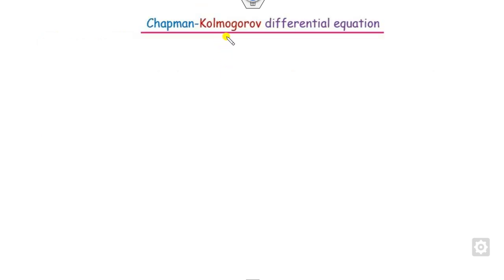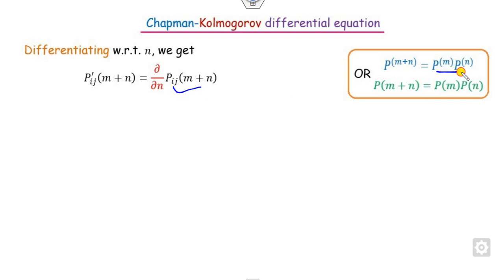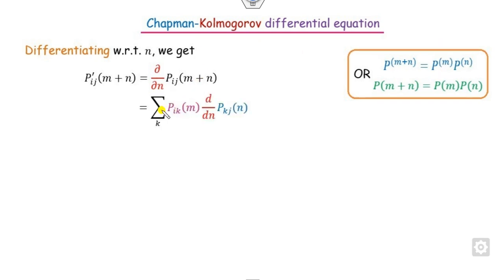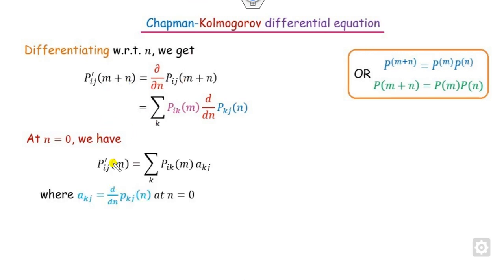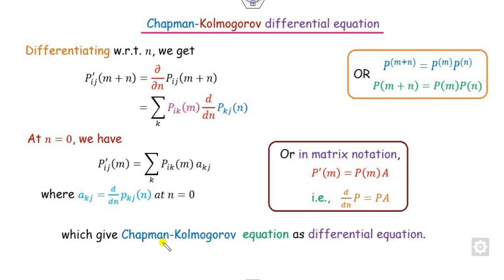The Chapman-Kolmogorov differential equation is obtained by differentiating with respect to n. We write P'_ij(m+n) as the partial derivative with respect to n. The part constant in n is taken outside, and evaluating at n=0 gives the initial value. At n=0, that term is called a_jk, or in matrix form: P' = P · A. This differential equation is called the Chapman-Kolmogorov differential equation.